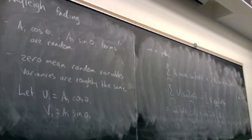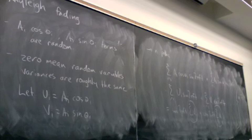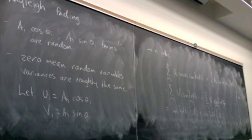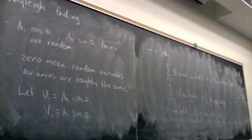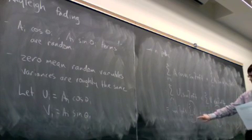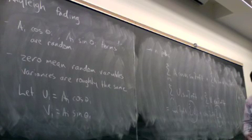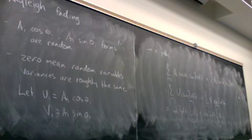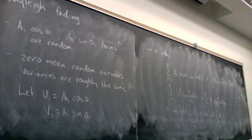Now we're getting somewhere, because the amplitude from the transmitted to the receiver is random. We want to say something about the probability distribution function that we observe. Now, if n is very large and I have a sum of n random variables, does anybody know what that distribution tends towards? It tends towards Gaussian.